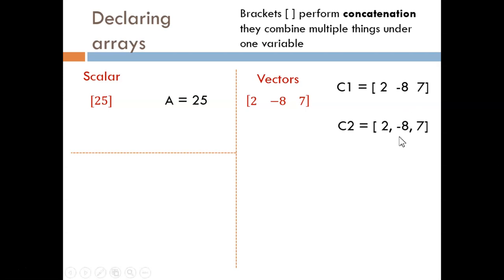For a column vector, things change slightly. Typically, you will use semicolons in between each value. Semicolons tell MATLAB to combine top to bottom.